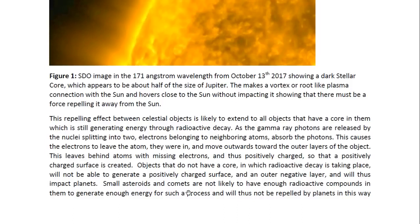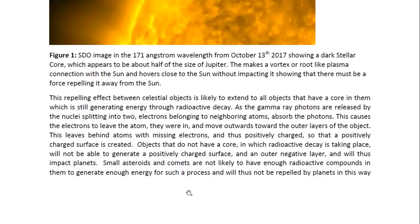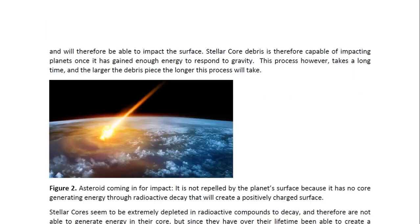Objects that do not have a core in which radioactive decay is taking place will not be able to generate a positively charged surface and an outer negative layer and will thus impact planets. Small asteroids and comets are not likely to have enough radioactive compounds in them to generate enough energy for such a process and will thus not be repelled by planets and will therefore be able to impact the surface. Stellar core debris is therefore capable of impacting planets once it has gained enough energy to respond to gravity. This process, however, takes a long time and the larger the debris piece, the longer this process will take.